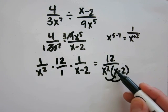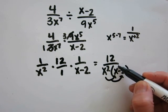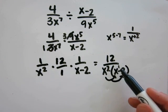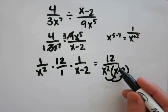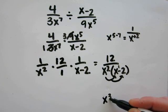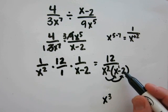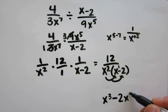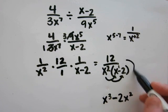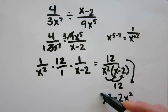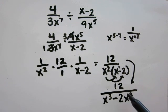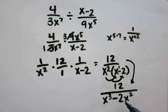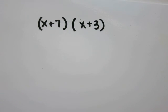Distribute this. I have the same base of x, and this is the same as x to the 1st power, so I'm going to add my exponents. 2 plus 1 is 3, so this becomes x cubed. x squared times 2 is 2x squared. Just carry the 12 down, so my answer is 12 over x cubed minus 2x squared. Looking at the selections, this is the same as letter C.